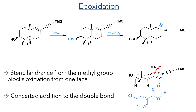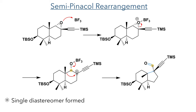The epoxide was then reacted in a semi-pinacol rearrangement. Activation of the oxygen with boron trifluoride triggered a rearrangement reaction in which the epoxide ring opens to generate a cation, and then migration of an alkyl group completes a ring contraction from a six-membered ring to a five-membered ring, revealing an aldehyde upon workup in place of the epoxide. This reaction was stereospecific and only generated a single diastereomer.